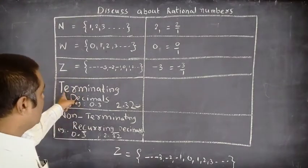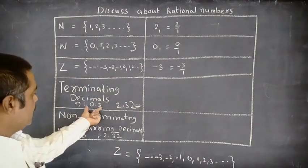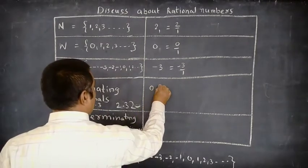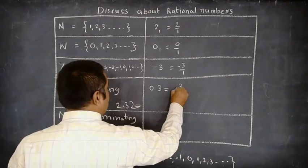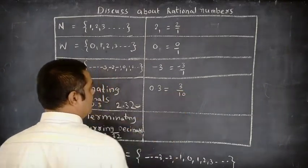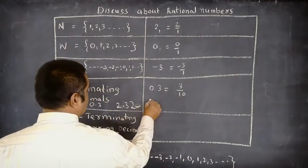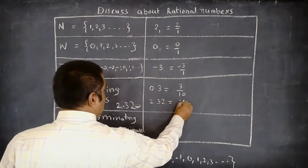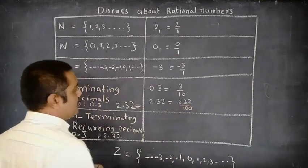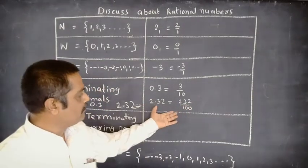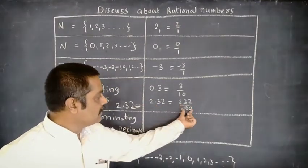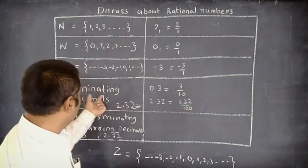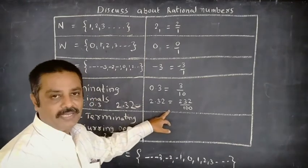Next, terminating decimals. For example, 0.3 can be written as 3/10. And 2.32 can similarly be written as 232/100. It is also in the form P/Q, and 100 is not equal to 0. That is why every terminating decimal is a rational number.